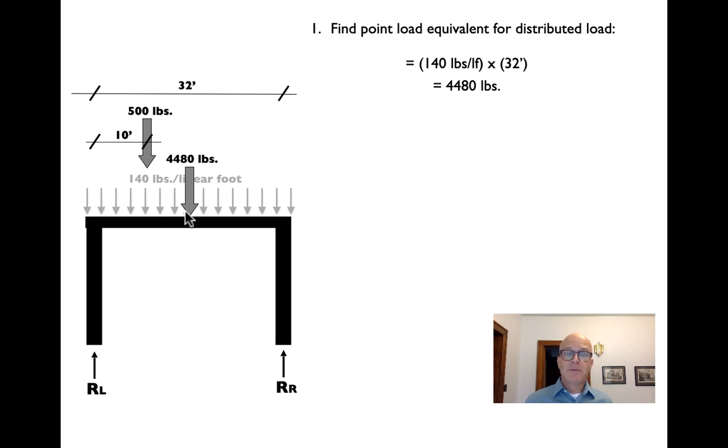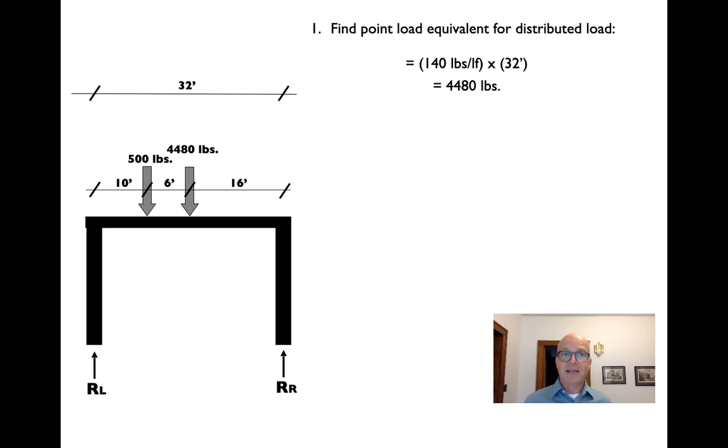So in the pier example where we have a 500 pound load and that 140 pound per linear foot distributed load, the reactions are going to be exactly the same as if we had the 500 pound load and the 4480 load that's acting again at the mid-span, the middle of the load itself, not necessarily the middle of the beam. That distributed load could rest on one side of the beam or halfway across or a third of the way across. The position that we assume the load is acting at is the center of the distributed load, not necessarily the beam itself.